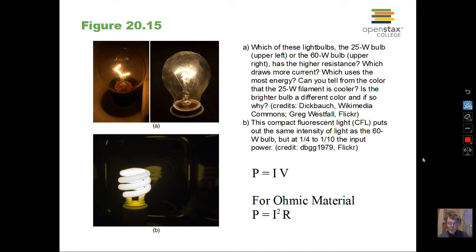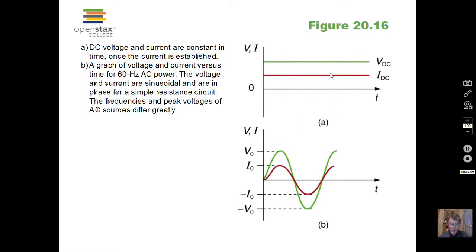Most of this course will deal with direct current, where the electrons always have the same direction of motion through the wire. In our society, alternating current is very important. With alternating current, the voltage and current are variable. In the United States, this would be a 60 Hz variation.